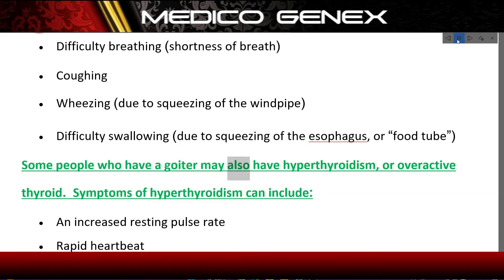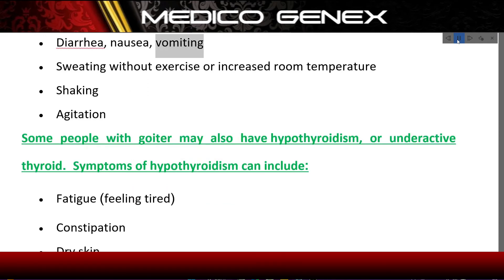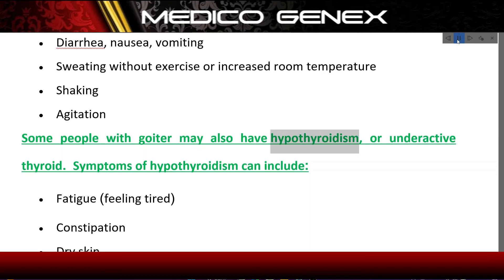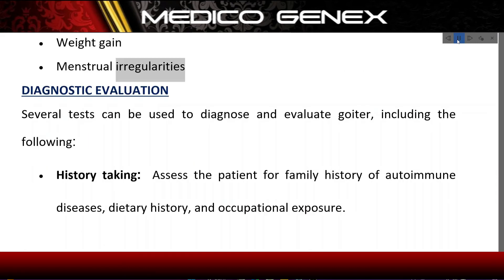Some people who have a goiter may also have hyperthyroidism, or overactive thyroid. Symptoms of hyperthyroidism can include an increased resting pulse rate, rapid heartbeat, diarrhea, nausea, vomiting, sweating without exercise or increased room temperature, shaking, and agitation. Some people with goiter may also have hypothyroidism, or underactive thyroid. Symptoms of hypothyroidism can include fatigue, constipation, dry skin, weight gain, and menstrual irregularities.